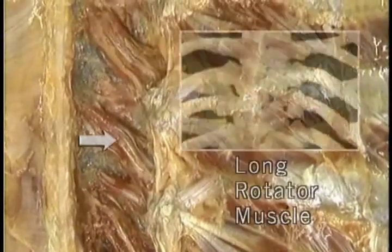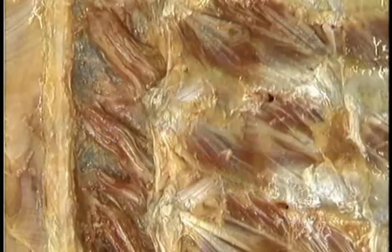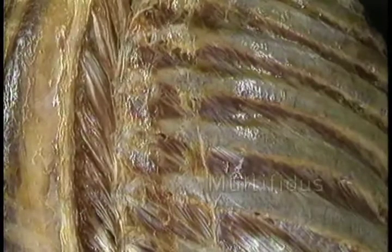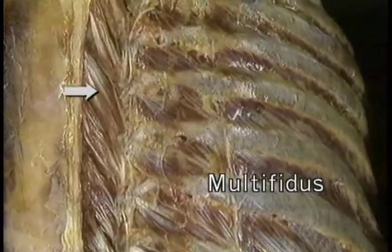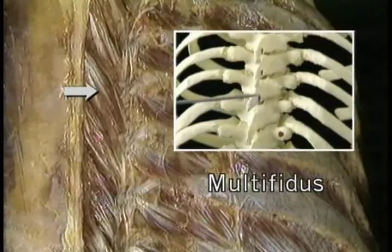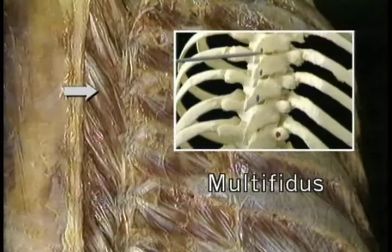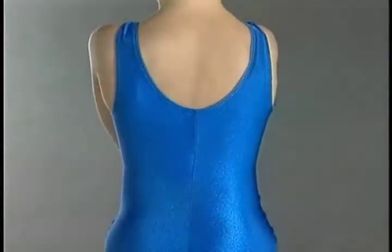The rotators are overlaid by a series of more obliquely running strips of muscle which together form one long muscle — the multifidus muscle. Each segment of the multifidus arises from a transverse process and inserts on the sides of the spinous processes two to four vertebrae above. The rotators and the multifidus extend the whole length of the spine. Their action is to produce rotation of the upper part of the spine towards the opposite side.